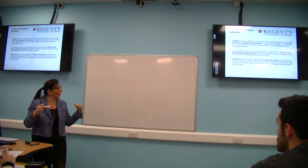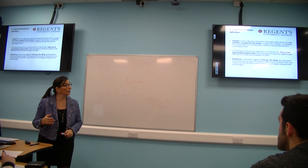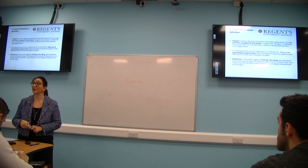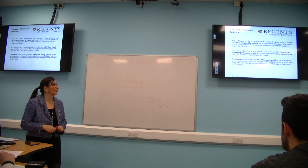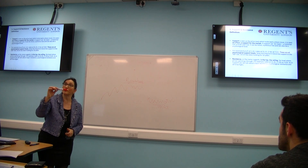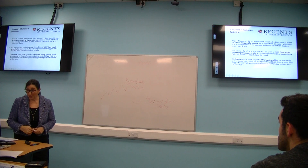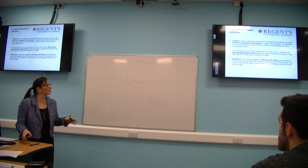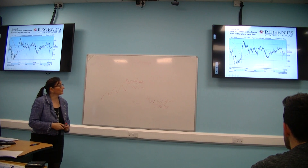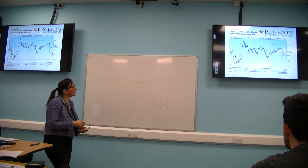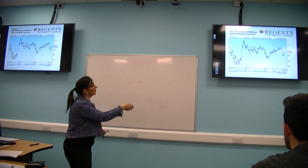Look out for these numbers because they can be quite important. Dollar/yen at 100 was a big level. Dollar/Chinese yuan at 7 was quite an important level with quite a lot of intervention at those levels. These levels are really looked at quite carefully.